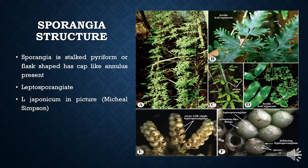By the dehiscence of the annulus, the spores are liberated in these early leptosporangiate ferns. In the diagram, we can see the annular region clearly. In one diagram, the annulus has been removed showing how spores are liberated by dehiscence. In another diagram, we see that a few of the annular cells have just dehisced while the rest are still immature and intact.